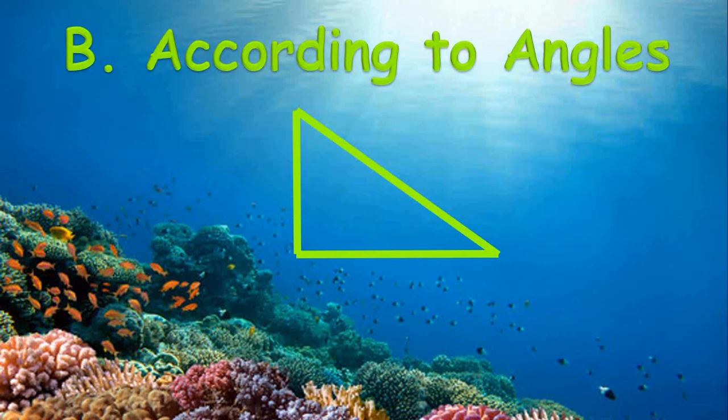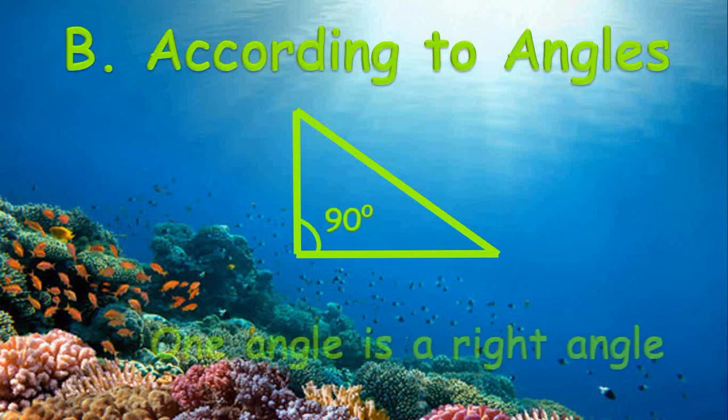The next classification according to angle is a triangle that has a 90 degrees angle or right angle, which will be named as a right triangle.